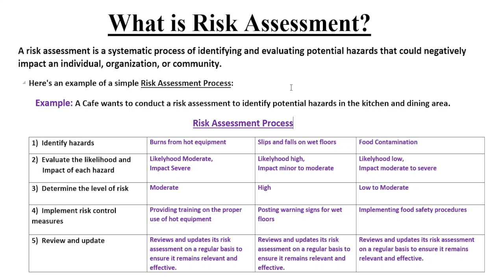A risk assessment is a systematic process — concentrate on that highlighted word. Basically, a risk assessment is a systematic process of identifying and evaluating potential hazards that could negatively impact an individual, organization, or community. It is a systematic process because there is a proper sequence: first you identify the risk, then you evaluate the likelihood and impact of that particular hazard.